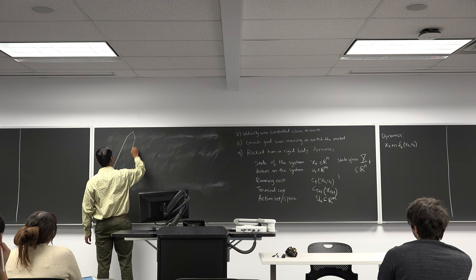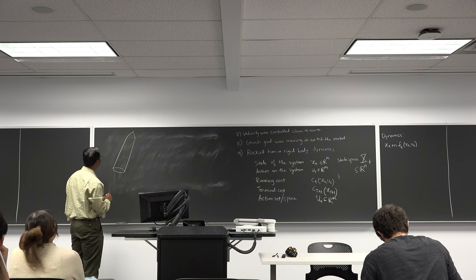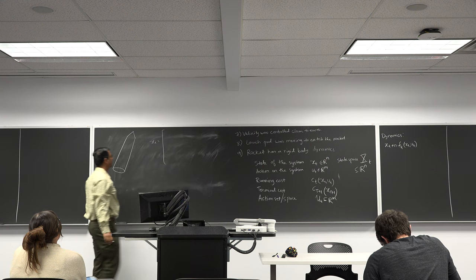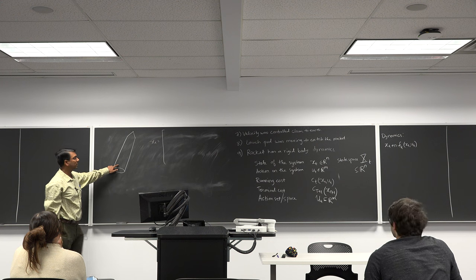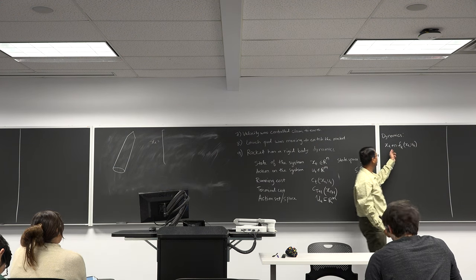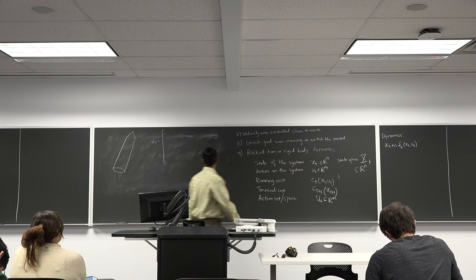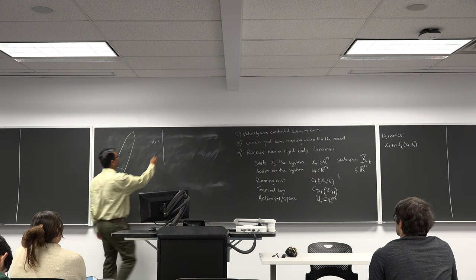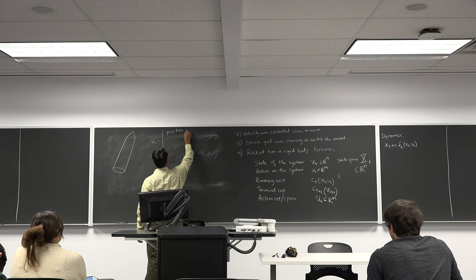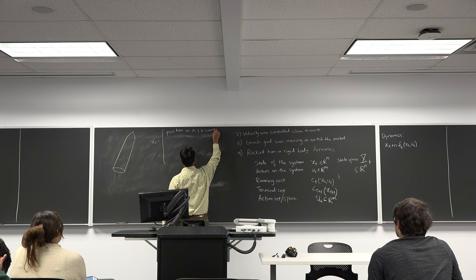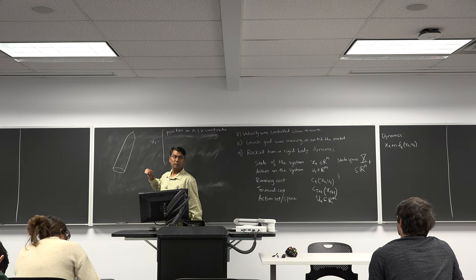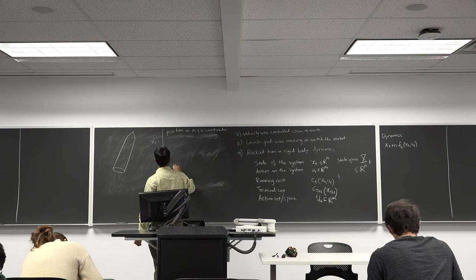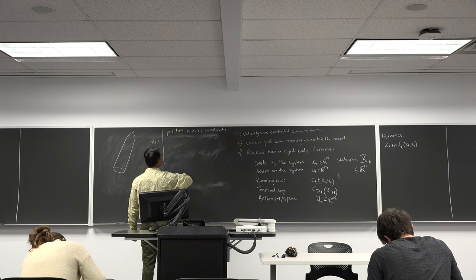Here is my rocket — it looks like a rocket, so it must be a rocket. What is my state? What does x_t comprise of? The minimum number of variables to track so you can predict the next state based on actions taken. Position in x, y, z coordinates — with the origin at the launchpad. So: position in x, y, z coordinates.